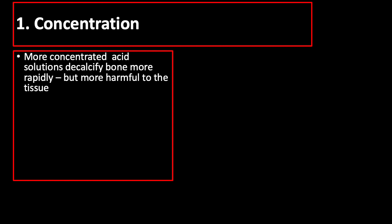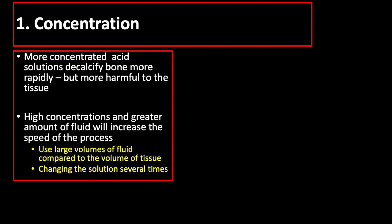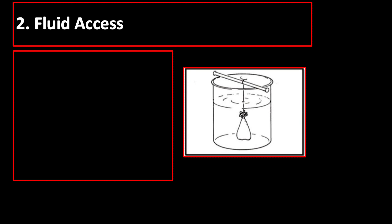Let us discuss these factors one by one. First is concentration. In general, more concentrated acid solutions decalcify bone more rapidly but are more harmful to the tissue. High concentrations and greater amount of fluid will increase the speed of decalcification. Rapid depletion of an acid or chelator by the reaction with calcium can be avoided by using large volumes of fluid compared with the volume of tissue and by changing the solution several times. The recommended ratio of fluid to tissue volume for decalcification is 20 to 1.